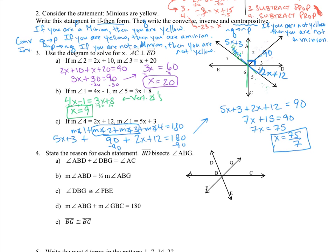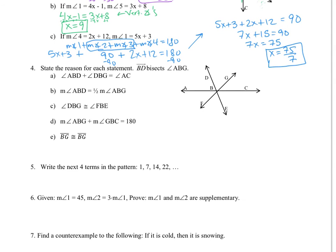For number 4, part A: the ray bisects the angle, so angle ABD is congruent to angle DBG. These two add up to the whole angle ABG because of the angle addition postulate. The measure of angle ABD equals one-half the measure of angle ABG — this is because of an angle bisector. The angle bisector cuts it in half — that's our reason.